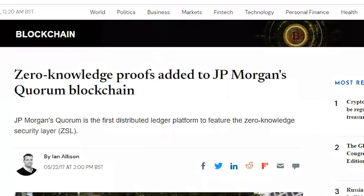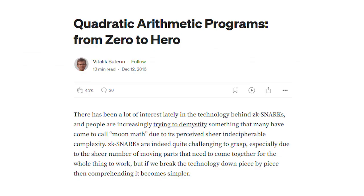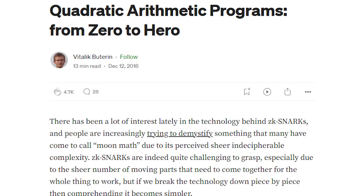As early as 2017, JP Morgan integrated ZK-SNARKs into their Quorum blockchain. Ethereum founder Vitalik wrote about ZK-SNARKs in 2016.